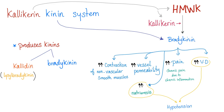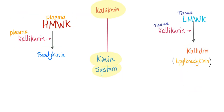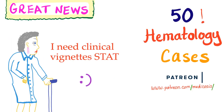What does bradykinin do? It contracts the non-vascular smooth muscles. Increased vessel permeability can lead to angioedema. Increased pain — the chronic pain due to chronic inflammation. Increased natriuresis and vasodilation both lead to hypotension. In the kallikrein-kinin system, whether you are in the plasma or in the tissue, you can end up with a kinin either way.